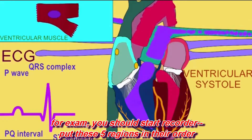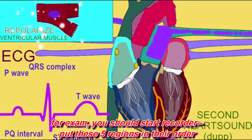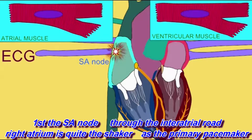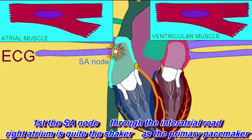For exam, you should start a recorder, put these five regions in their order. First, the SA node, through the inter-atrial road. Right atrium is quite the shaker, as primary pacemaker.